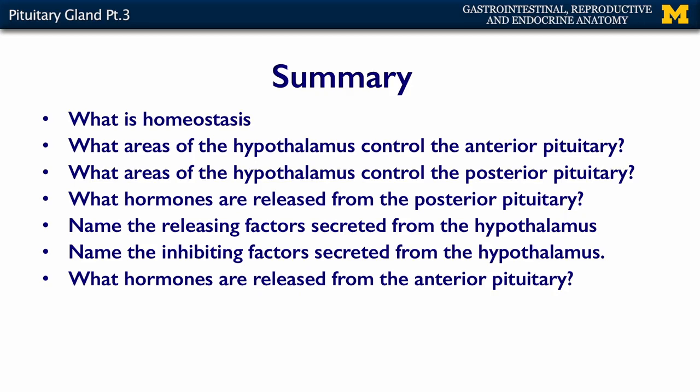In summary: what is homeostasis? What areas of the hypothalamus control the anterior pituitary? What nuclei control the posterior pituitary? What hormones are released from the posterior pituitary? Be able to name the releasing and inhibiting factors secreted from the hypothalamus, and what hormones are released from the anterior pituitary. This is a substantial assessment, because the pituitary and hypothalamus are the keys — the gateways to understanding most of the endocrine system. Once you have a grip on these basic facts, you'll be ready for the assessment.